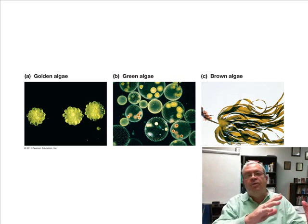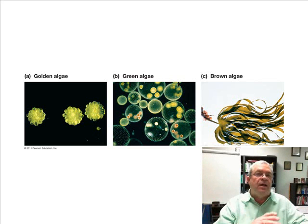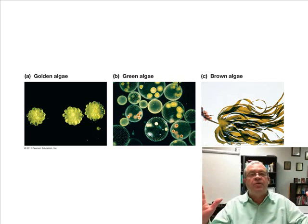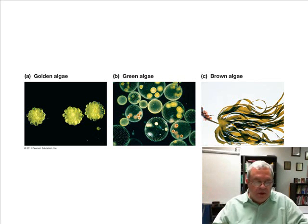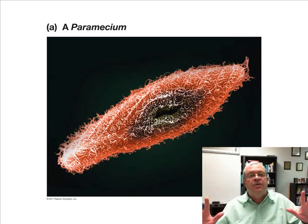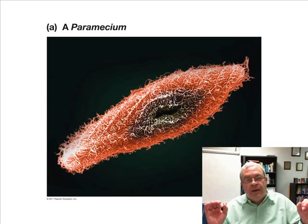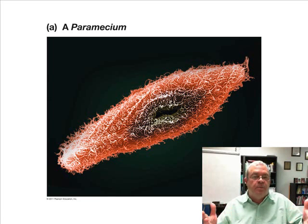All algae are protists, and all photosynthetic protists are some kind of algae. But are all protists photosynthetic? No. Here's a paramecium — it's not photosynthetic. There are lots of protists that aren't photosynthetic. What's the term for them? They're not called algae; they're called protozoans — a common term for protists that are not photosynthetic. So a paramecium would not be a type of algae; it would be a protozoan.